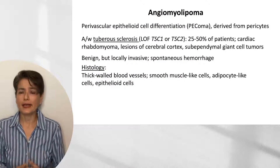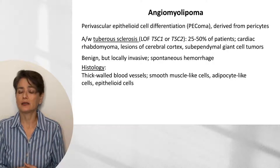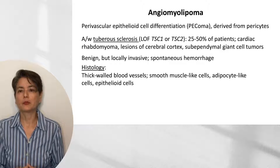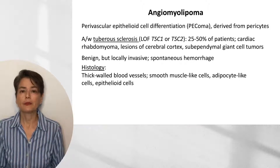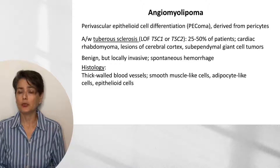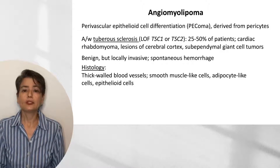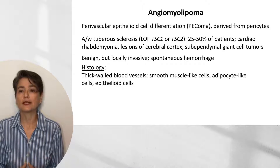Now let's move to angiomyolipoma, an important tumor to recognize because it is associated with tuberous sclerosis complex. Angiomyolipomas belong to a family with perivascular epithelioid cell differentiation, referred to as PECOMAs, and are thought to be derived from pericytes. Tuberous sclerosis is due to loss of function of TSC1 or TSC2, and about 25–50% of those patients will have renal angiomyolipomas. Tuberous sclerosis is also associated with cardiac rhabdomyomas, cortical tubers, and subependymal giant cell tumors (SEGA).